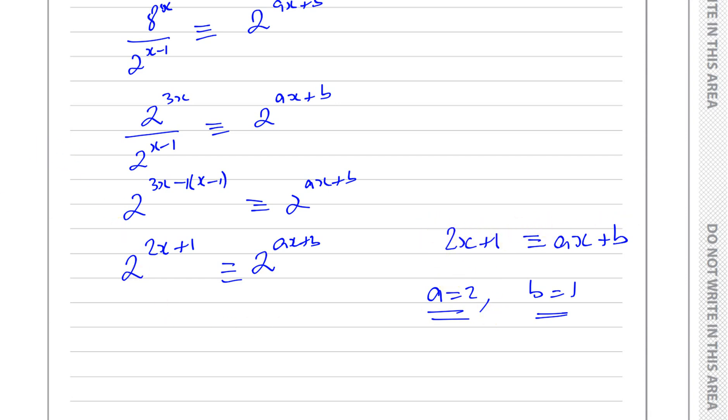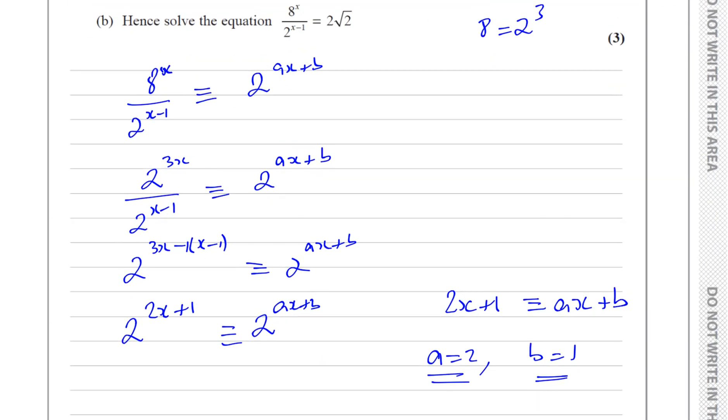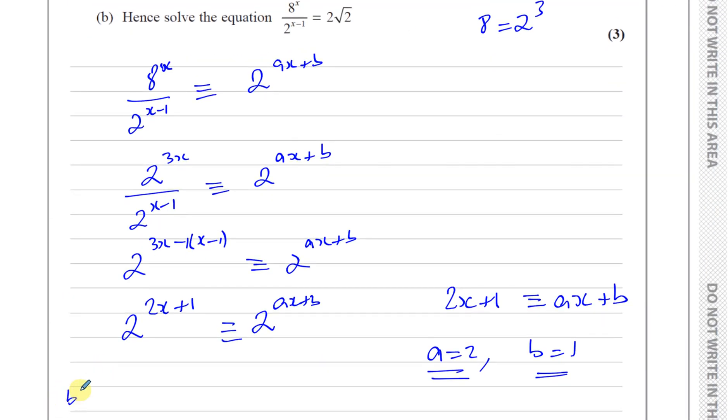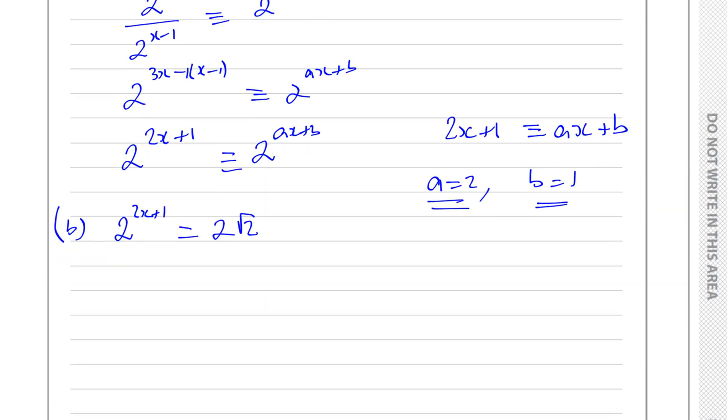Part B says hence solve this equation. We've just shown that 8 to the power of X over 2 to the power of X minus 1 is the same as 2 to the power of 2X plus 1, and we're told that equals 2 times root 2.